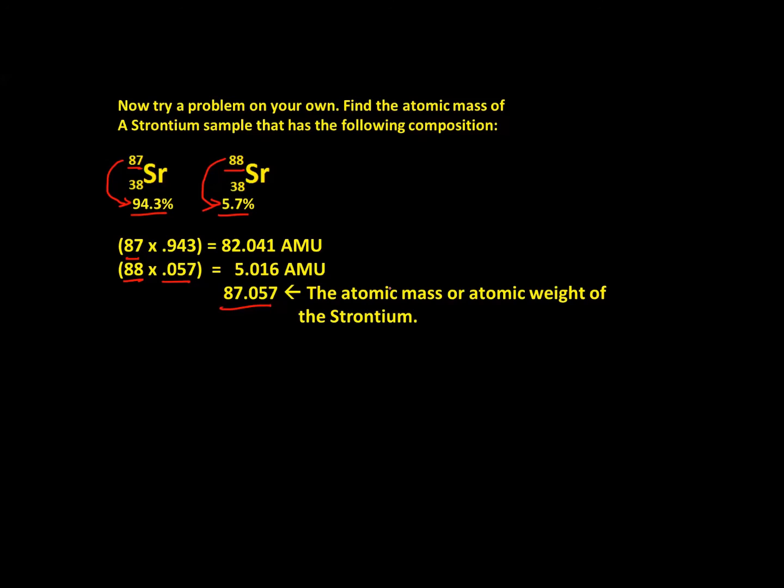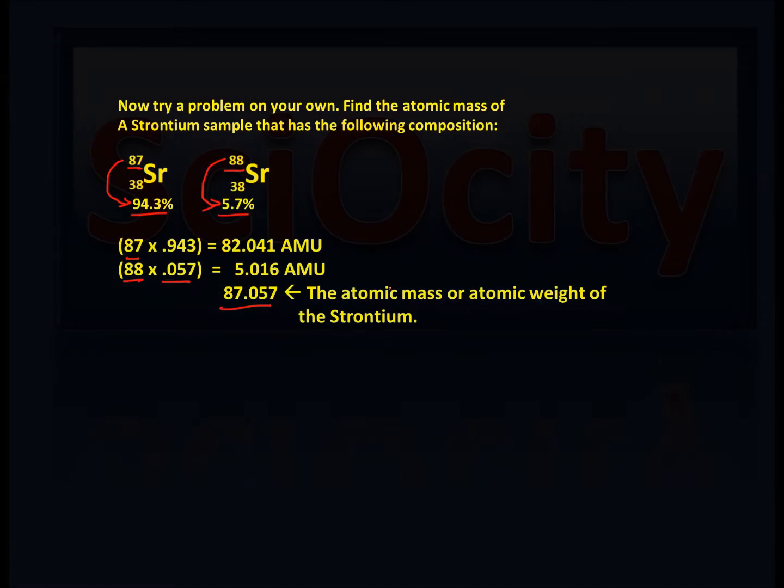And that is the difference between mass number and atomic mass. Mass number is specific to any atom — it tells you the total number of particles in the nucleus for any given atom. The atomic mass you find on the periodic table is a weighted average of all the isotopes of that element found in nature.